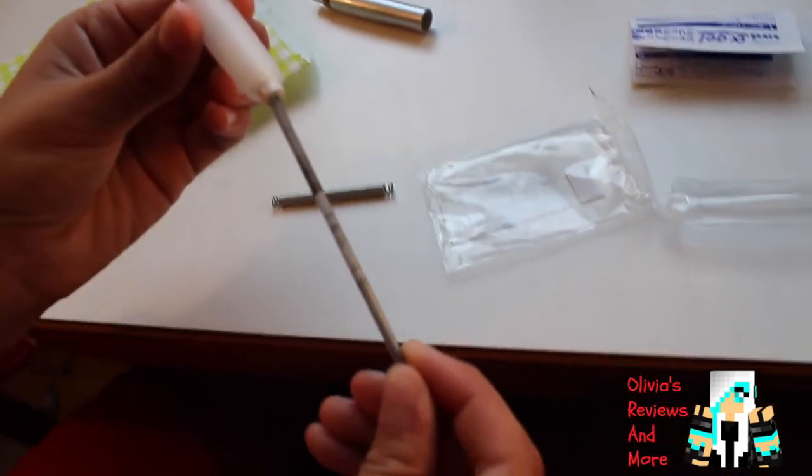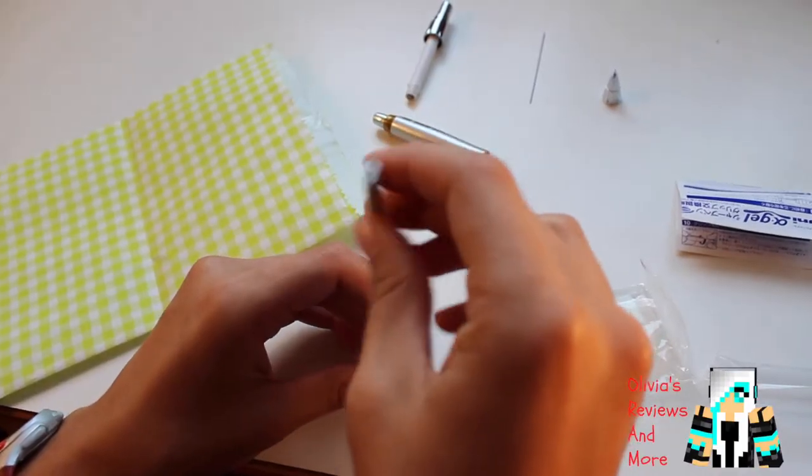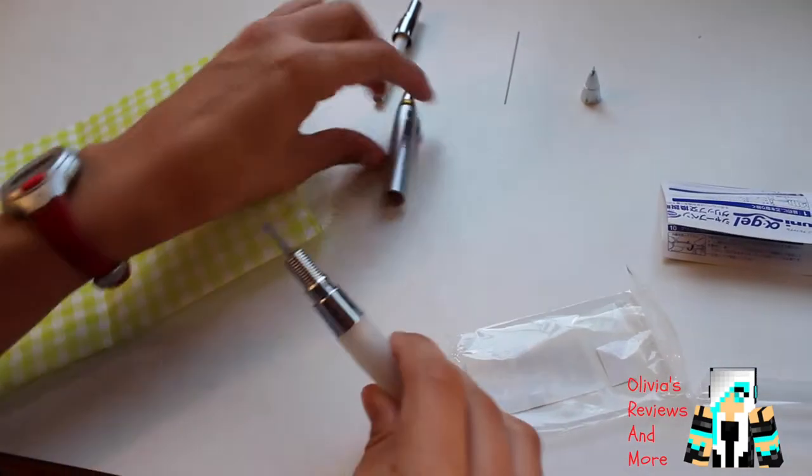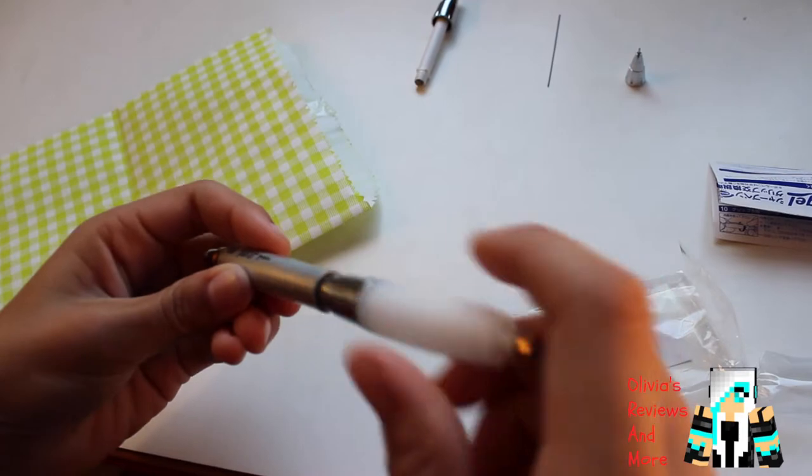Take your Oxydel grip and put your lead refill through this way, just like that. Then put it in and screw it in.